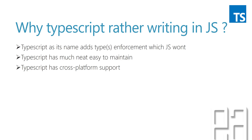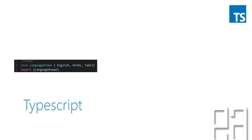If you come from a C# or Java background, you will really love TypeScript. TypeScript also has cross-platform support, meaning you can run TypeScript in any browser, any operating system, and any device. For example, code written in TypeScript for an enum looks something like this — you can see it has an enum named 'language' with variables like English, Hindi, and Tamil. You can export this enum to other modules that consume it.